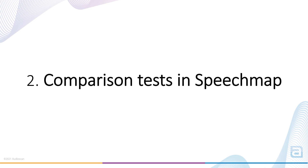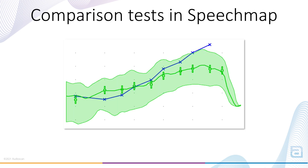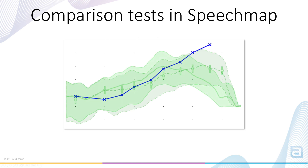Comparison tests in speech map. Comparison tests allow you to set a previously measured curve in speech map as a comparison test. A second test can then be performed in the same test slot and visually compared with the previous measurement. This capability can be particularly useful when, for example, a client is changing hearing aids and you'd like to program the new devices with an output identical to a previous set.